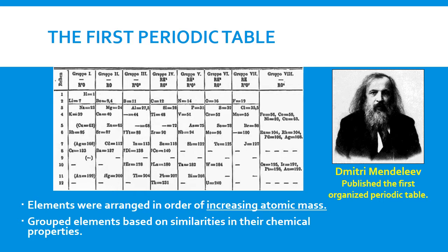He also predicted the properties of these undiscovered elements, and when these elements were later discovered, like germanium was discovered, its properties were almost identical to what Mendeleev had predicted. So here we have our blank spaces that he left for the unknown elements.